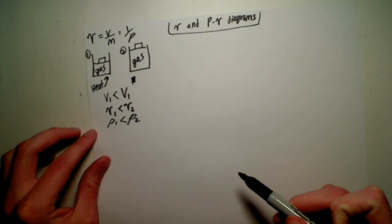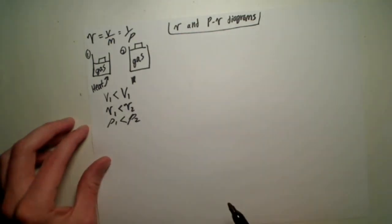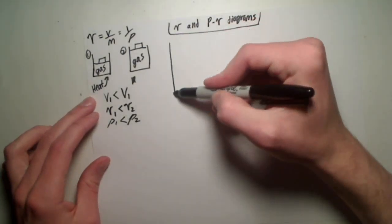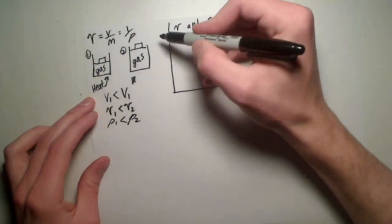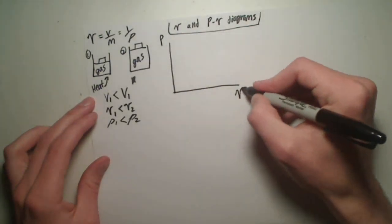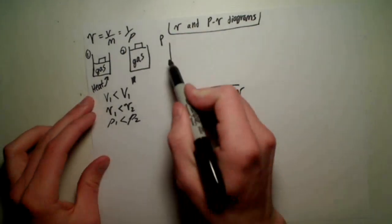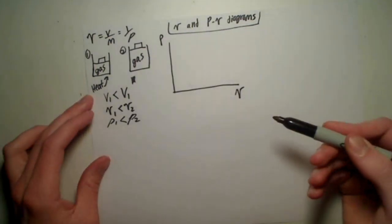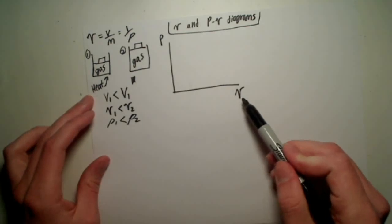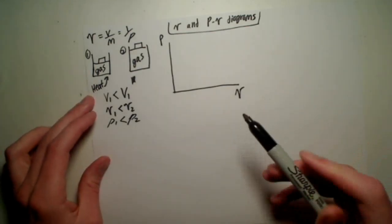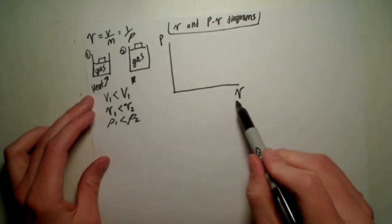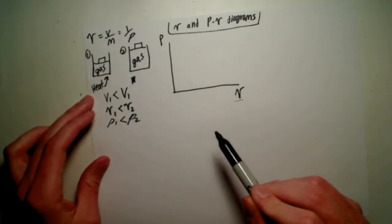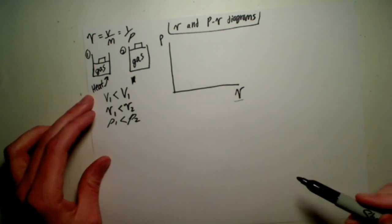Now let's graph this process in what we call a PV diagram. Now a PV diagram is just a regular old graph with pressure on the y-axis and specific volume on the x-axis. You may have seen these before, but instead of specific volume, you had regular volume. These are very similar, just the values for the x-axis or the specific volume axis may be slightly different, but the pattern should still stay the same.